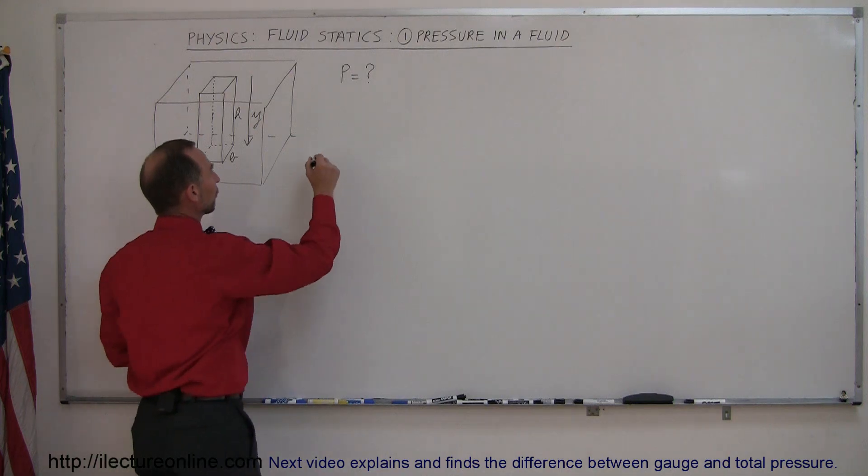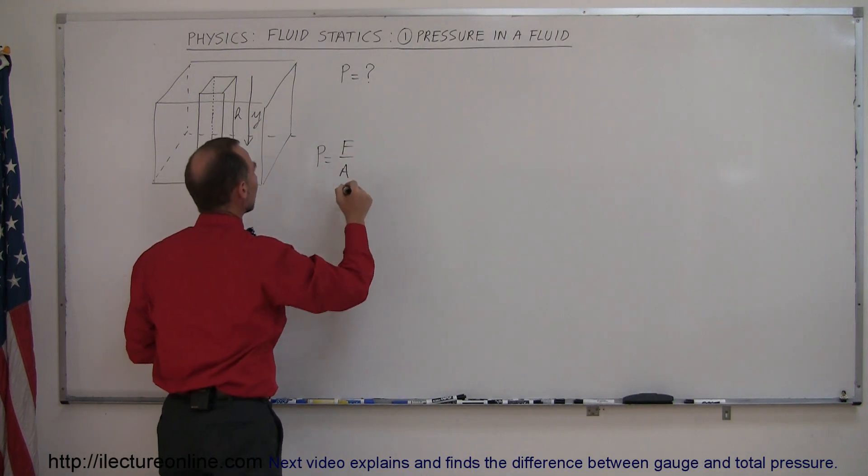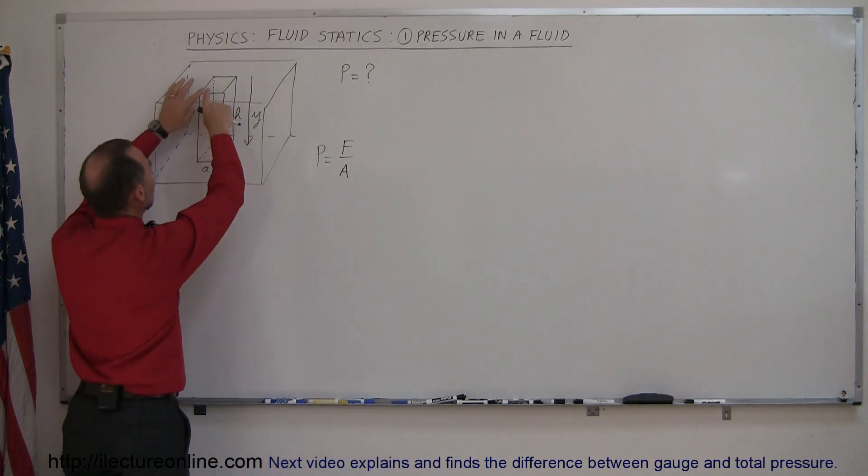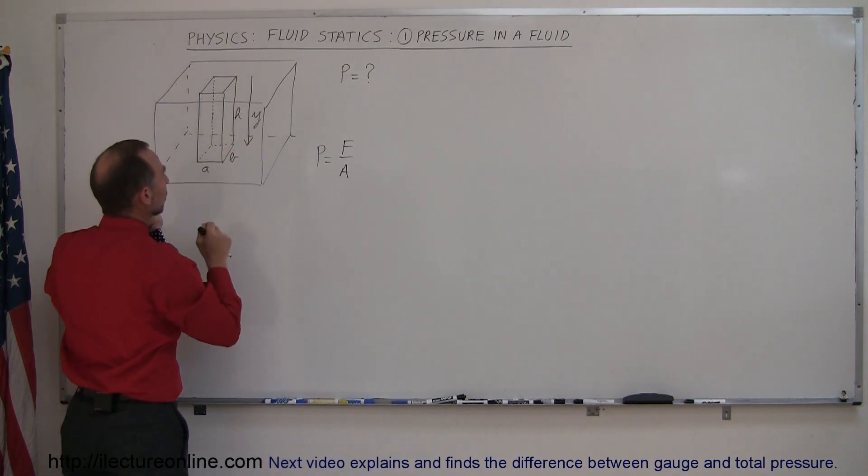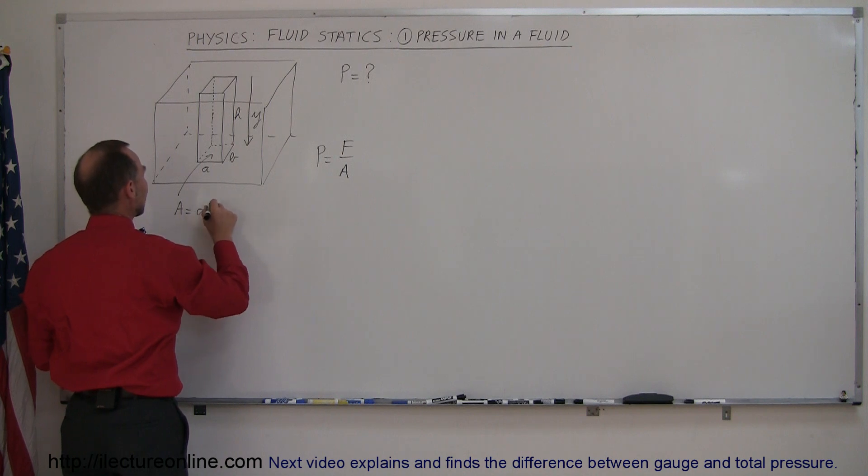And of course the definition of pressure, that's equal to the force divided by the area. So what we have here is we have an imaginary column of water that's resting on the bottom of the pool. So the surface area right here, area, is simply equal to the width times the length of that region. So that's A times B.